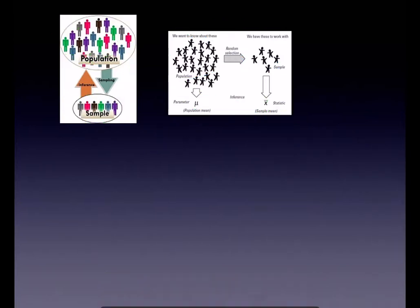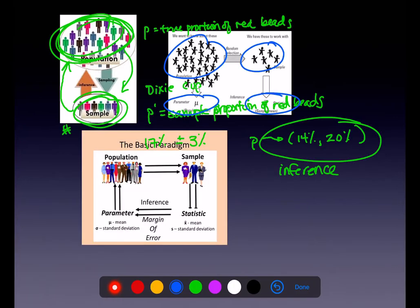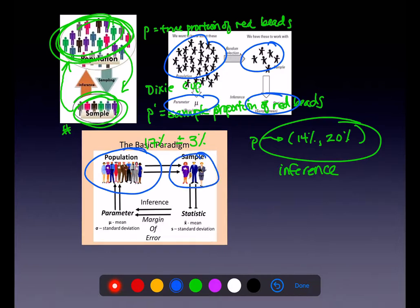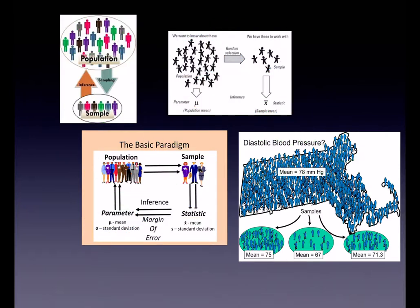That's our general workflow: we have a population, we get a sample, we crunch a number, and we approximate a parameter. From our population, pick a sample. From our sample, crunch a statistic. Then add a little margin of error and get to our parameter.